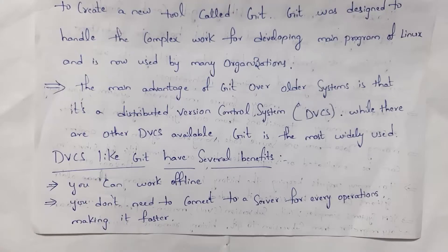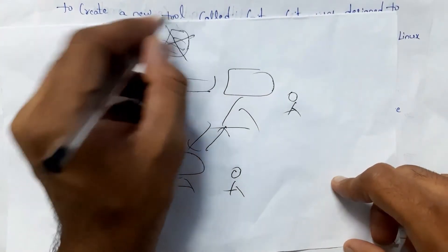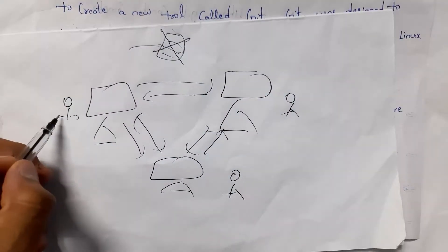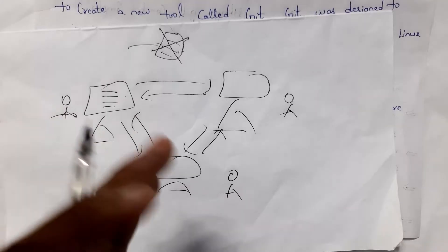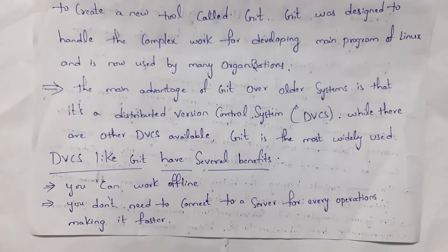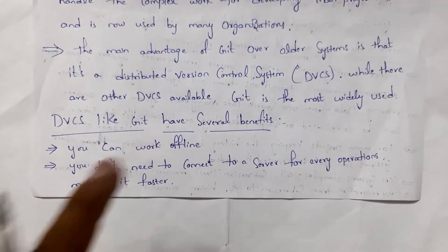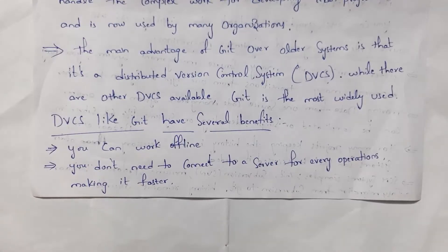Compared to older systems, Git has one major advantage: it is a distributed version control system. That means there is no central server to store files — each developer works independently by sharing code among themselves. There are many distributed version control systems available, but among all of them, Git is one of the most famous tools.